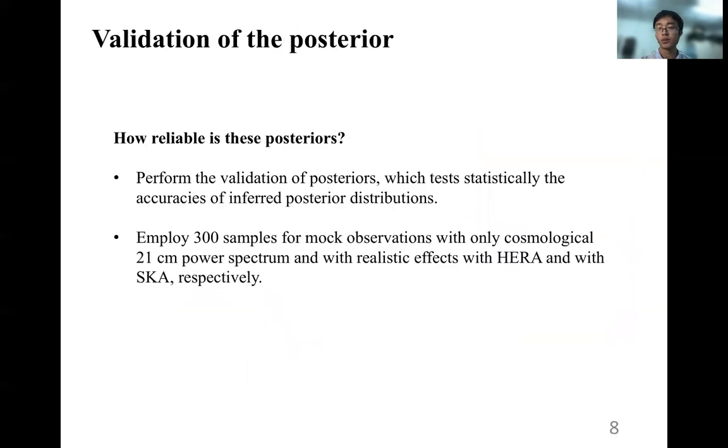Until now, we have seen that the neural networks can get very nice results. Then we may ask the question, how reliable are these posteriors? So we perform the validation of posteriors, which tests statistically the accuracy of the inferred posterior distributions. We employ 300 samples for mock observations with only cosmological 21cm power spectrum, and with realistic effects with HERA and with SKA, respectively.